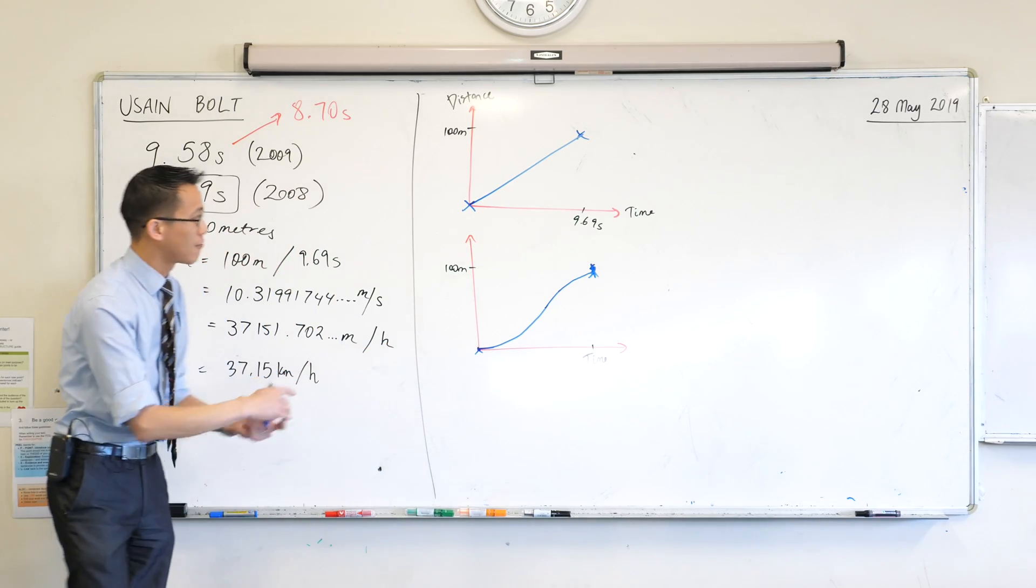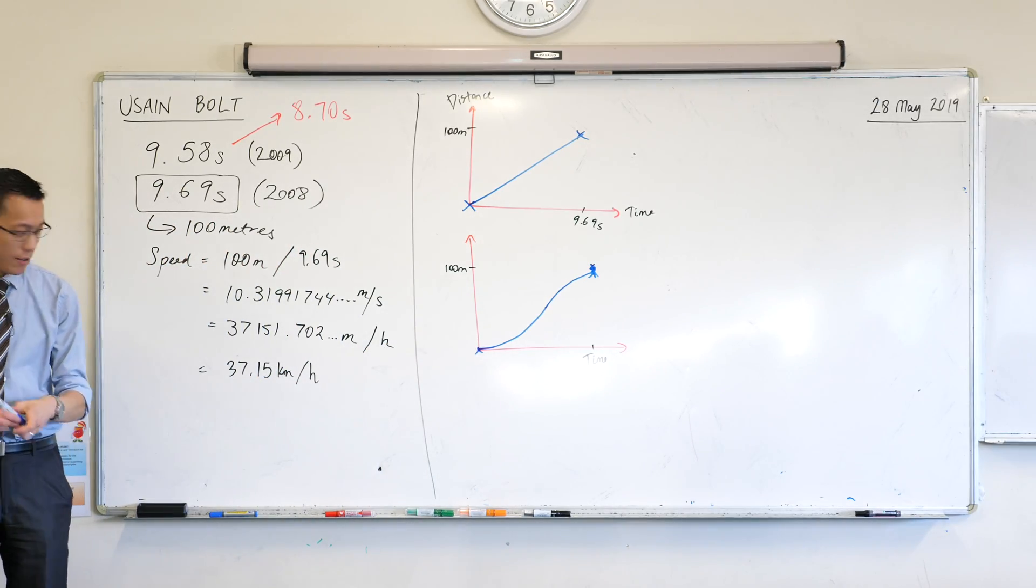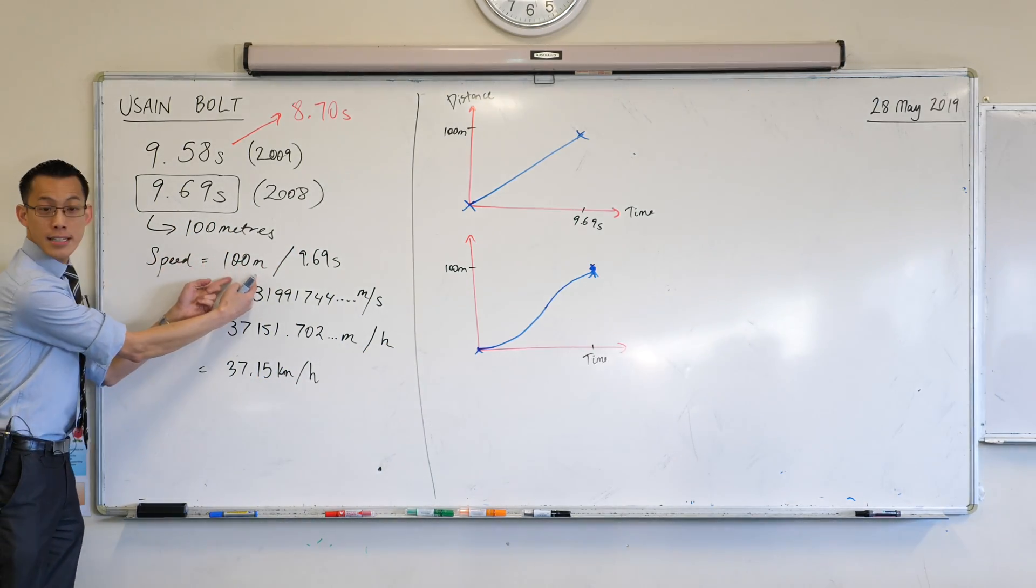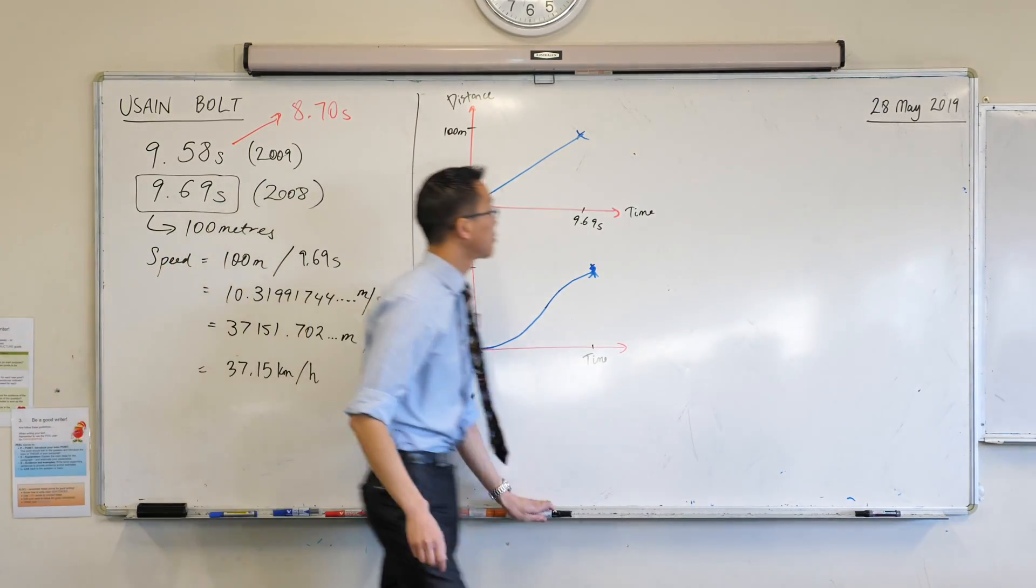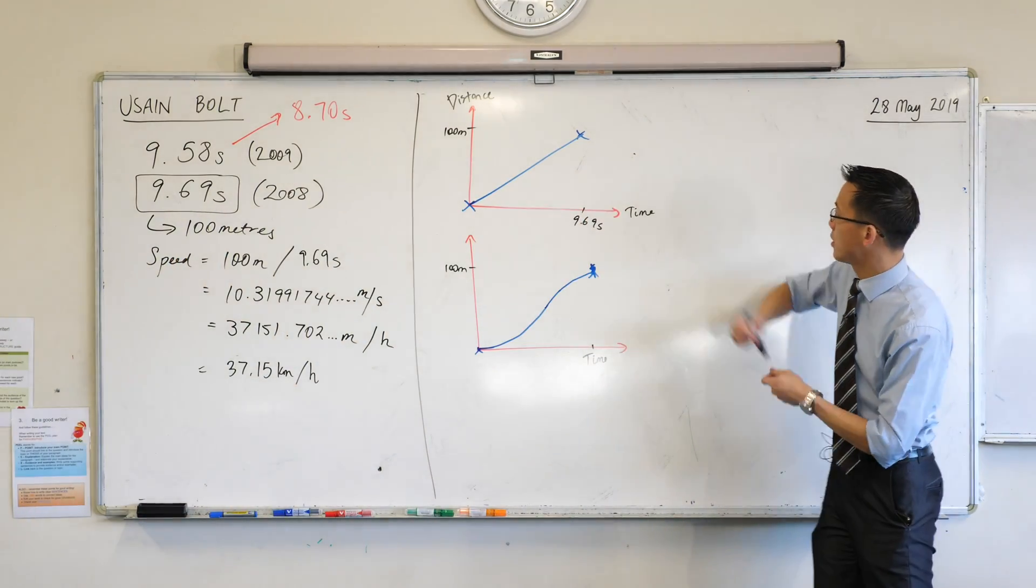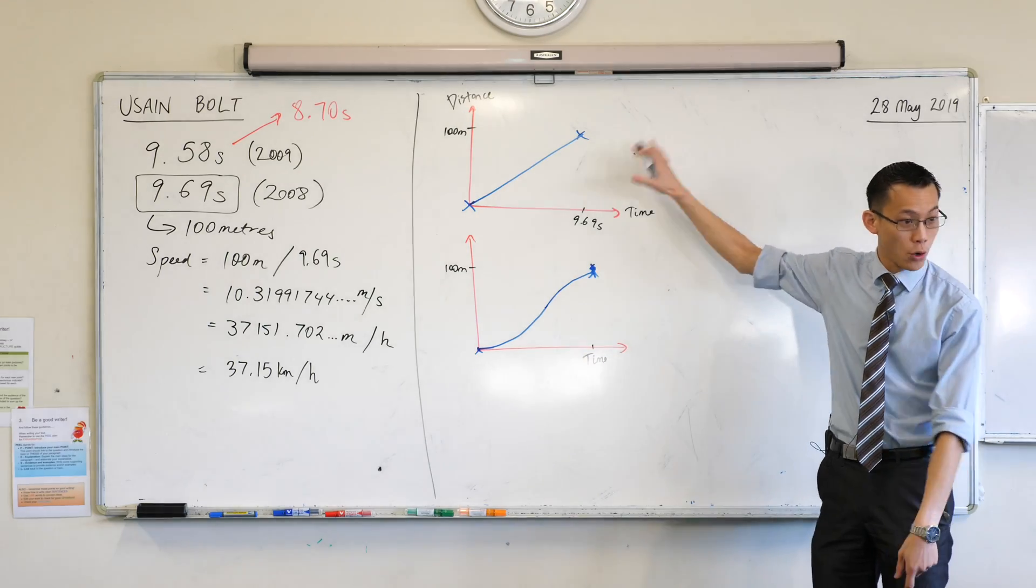So this is better, right? Now, when we talk about speed, remember we said it's a distance over a time. Have a look at this up here. Where is the distance on here? On this, on your graph? I'm going to do this twice, actually. Can you mark out this whole distance here?